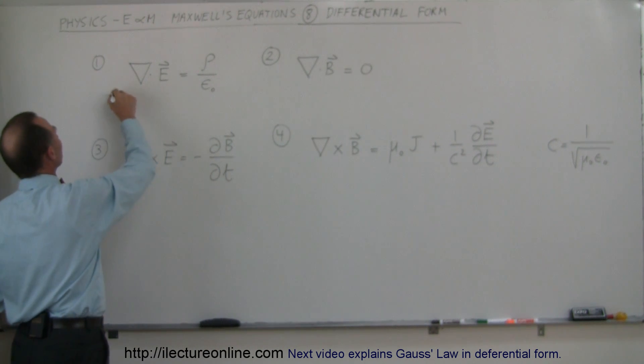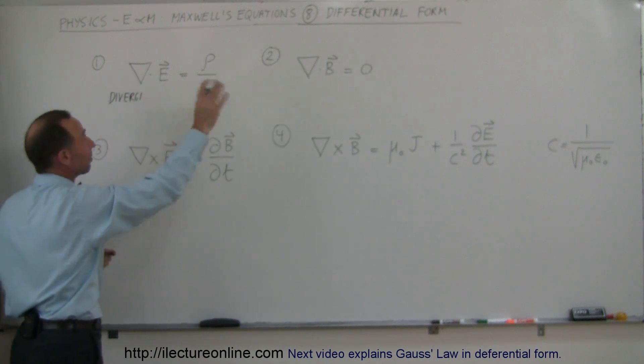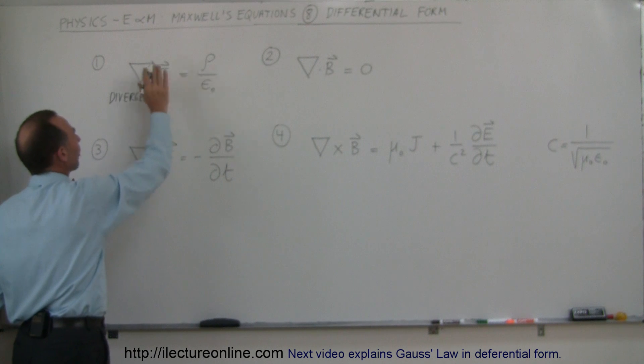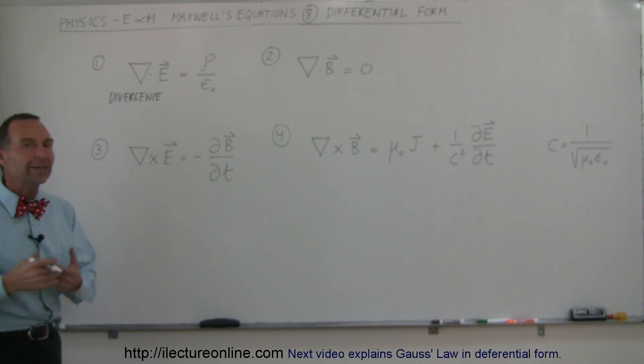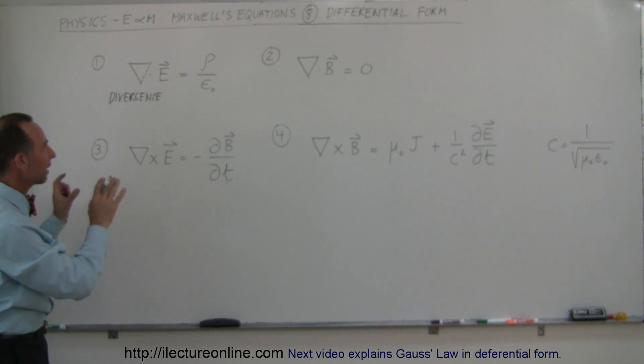The divergence is kind of like a differential and that's why we call that the differential form. So divergence is like taking the derivative of this electric field with respect to the x, y, and z axis and we'll show you later how that's done. So that's why we call it the divergence.